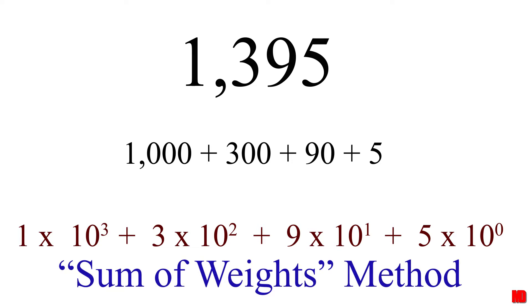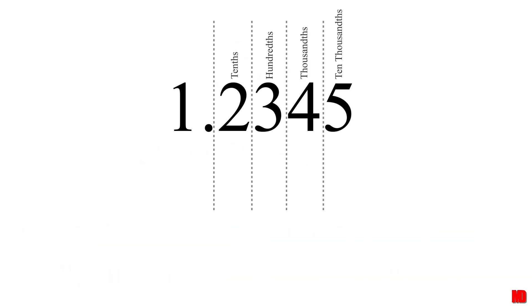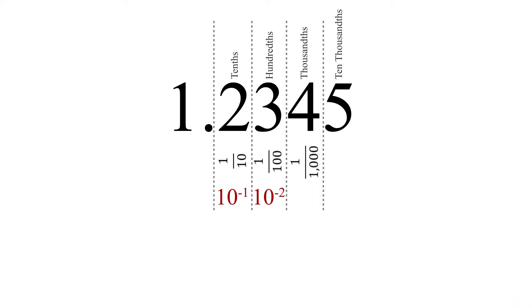We can do this with decimal places as well. Each decimal place also has a weight, which is a power of 10. The first decimal place is the tenths place because it represents a fraction with a denominator of 10. This is the same as 10 to the negative 1 power. The hundredths is 10 to the negative 2. The thousandths is 10 to the negative 3, and so on.